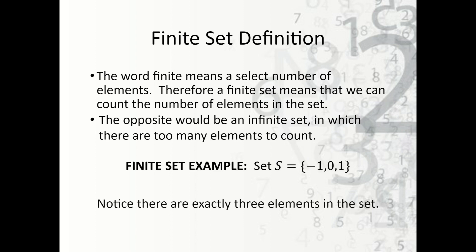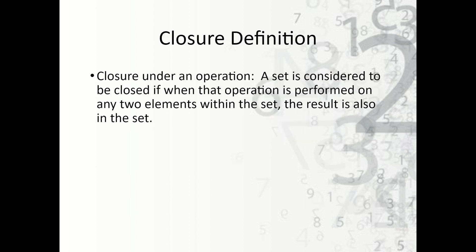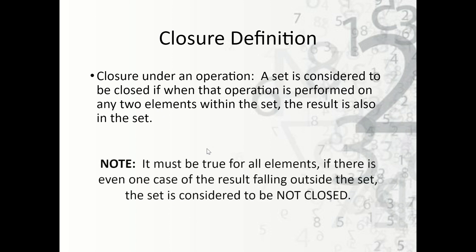Notice there are exactly three elements in the set. Now, closure definition — what does closure mean? Closure under an operation means a set is considered to be closed if, when that operation is performed on any two elements within the set, the result is also in the set. Note that this must be true for all elements in the set. If there is even one case where the result falls outside the set, then it is considered to be not closed.